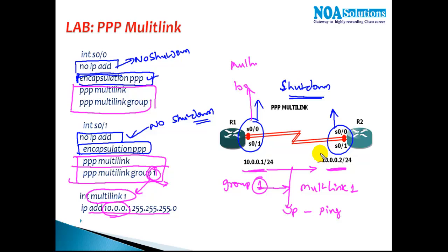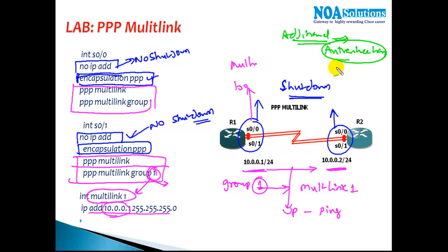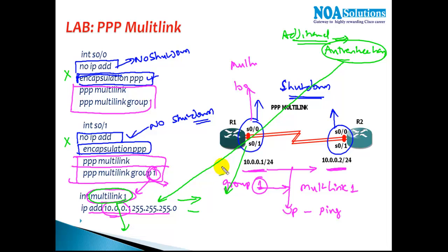These are the minimum configurations. If you want additional configurations, such as enabling authentication, you can do that — but whatever authentication configurations you decide on, you have to enable them on the multi-link interface, not on the physical interface. Once we configure multi-link, Router 1 is going to treat the multi-link as one interface, not as two separate interfaces, and it will start forwarding traffic from both interfaces effectively for load balancing.